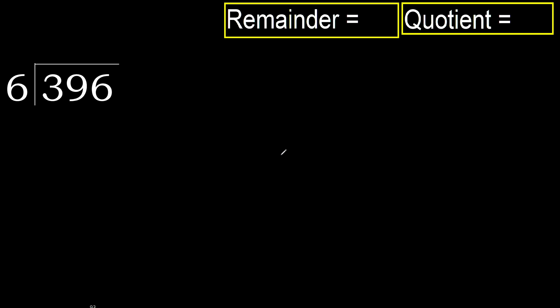396 divided by 6. 3 is less, therefore next. 39 is not less, therefore with 39.